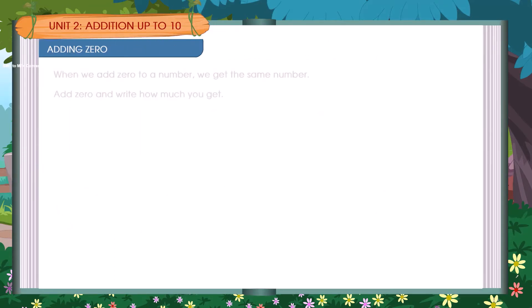Adding zero. When we add zero to a number, we get the same number. Add zero and write how much you get.